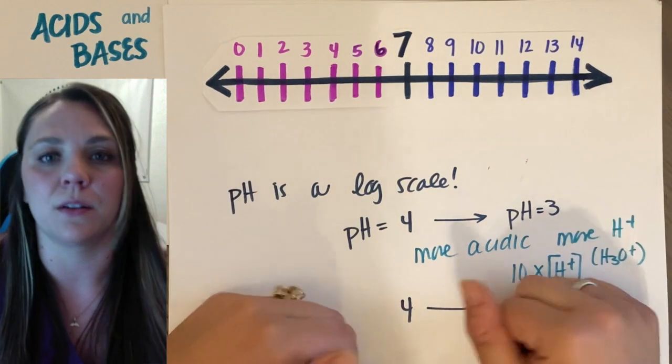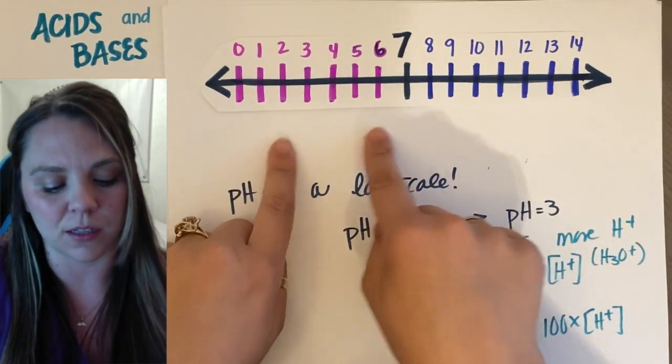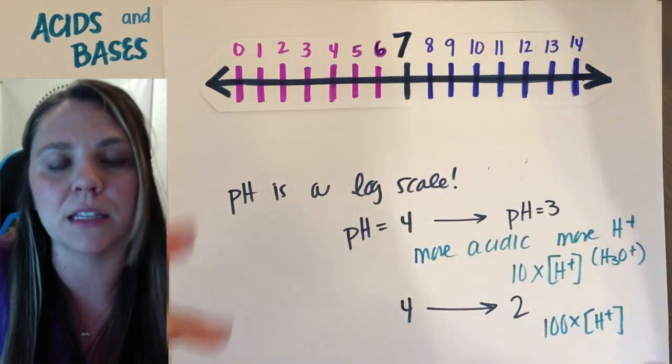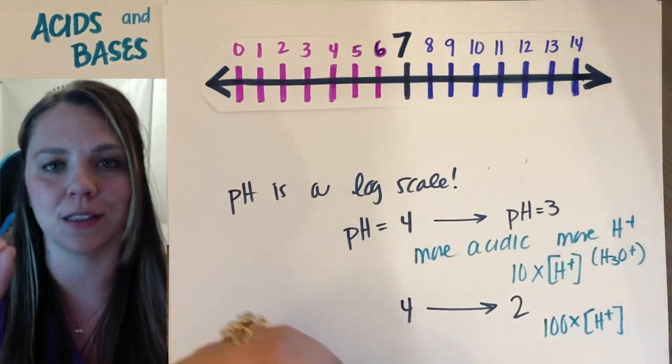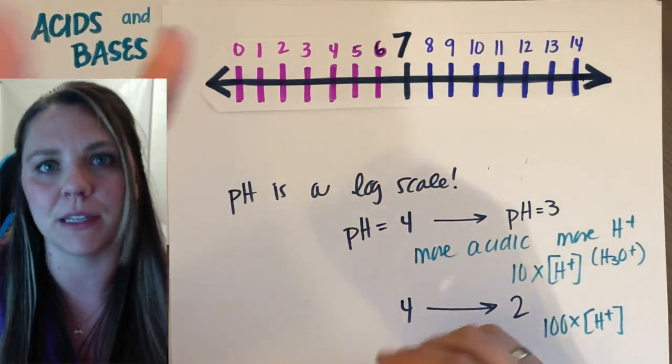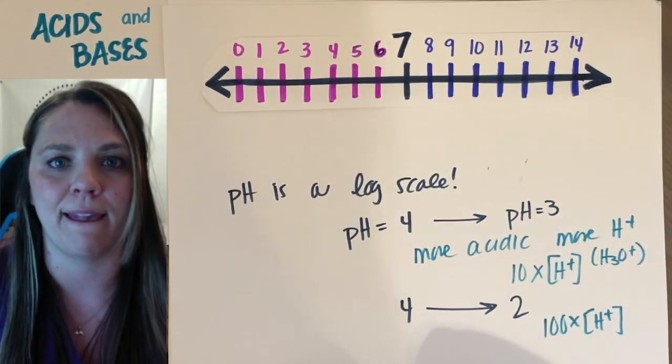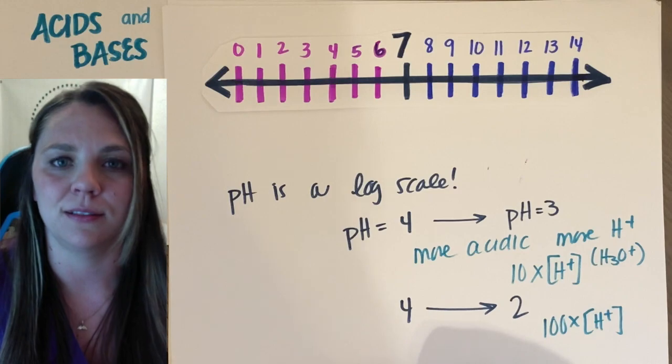And it's a logarithmic scale. So make sure we understand that a small change in pH is actually an exponential change in how much acidic particles or basic particles, hydronium or hydroxide, that's actually in that solution. Yay.